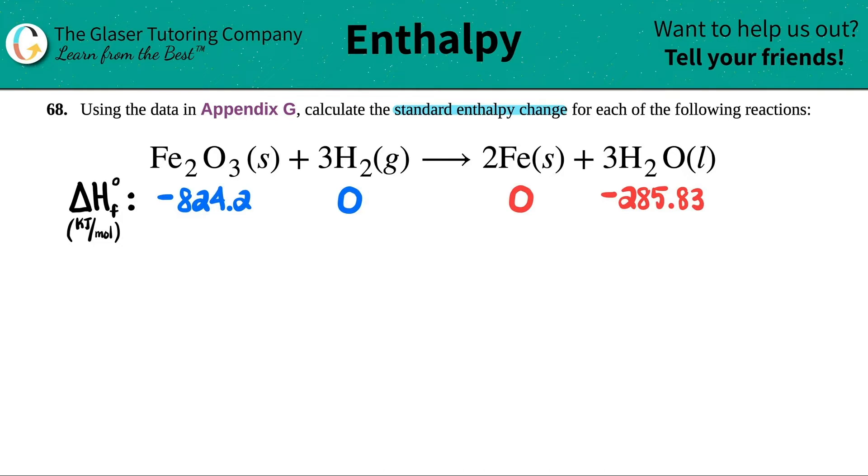I also want to just point out here that just be careful. There are going to be some compounds that have two different states. For example, if you look on Appendix G, you'll see H2O liquid, and then there will be another number for H2O gas. Just be careful you're taking the right one.